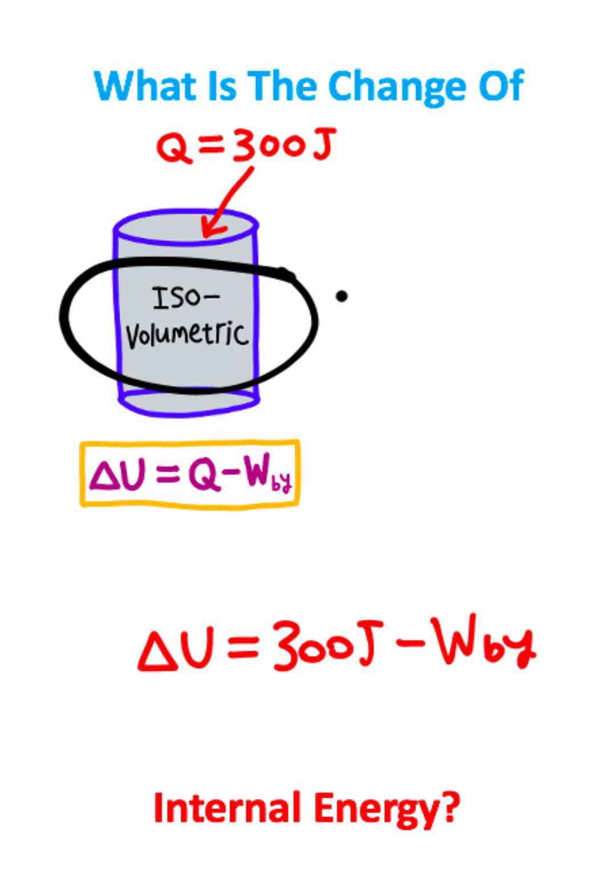Isovolumetric means that the volume does not change, and if the volume does not change, there is no work done by the system.